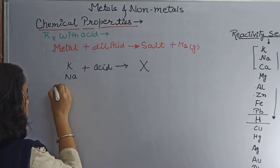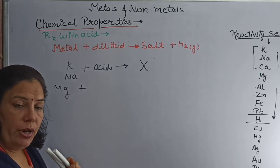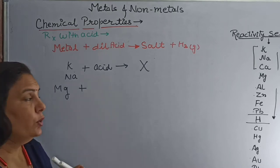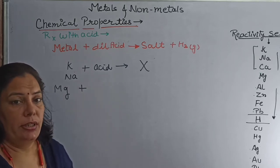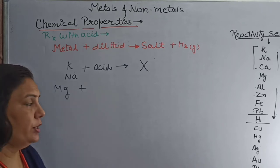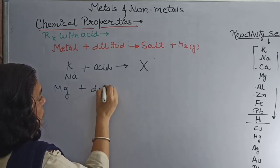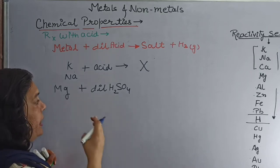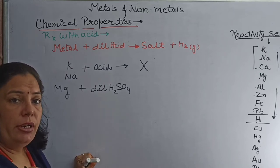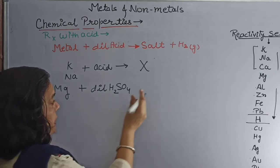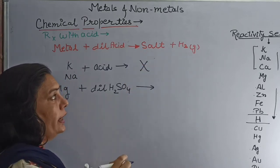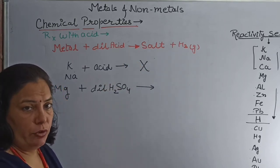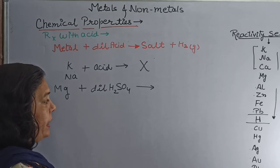Next, we can write the reaction of magnesium with acid. You can take either dilute hydrochloric acid or dilute sulfuric acid. You should not react nitric acid — the reason I will explain later. When magnesium reacts with dilute H2SO4, I will explain a trick to write down the product. Hydrogen gas is evolved — this is the confirmatory product. We can divide the acid into two parts.